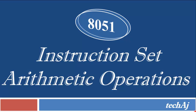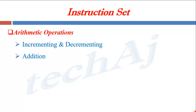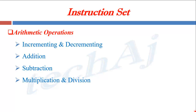Welcome all. In this video we are going to discuss arithmetic instructions of the 8051 microcontroller. Arithmetic instructions are categorized into five different types: incrementing and decrementing instructions, addition instructions, subtraction instructions, multiplication and division instructions, and decimal arithmetic instructions. Decimal arithmetic instructions are used in BCD operations. Now let us see each of these categories of instructions one by one with examples.